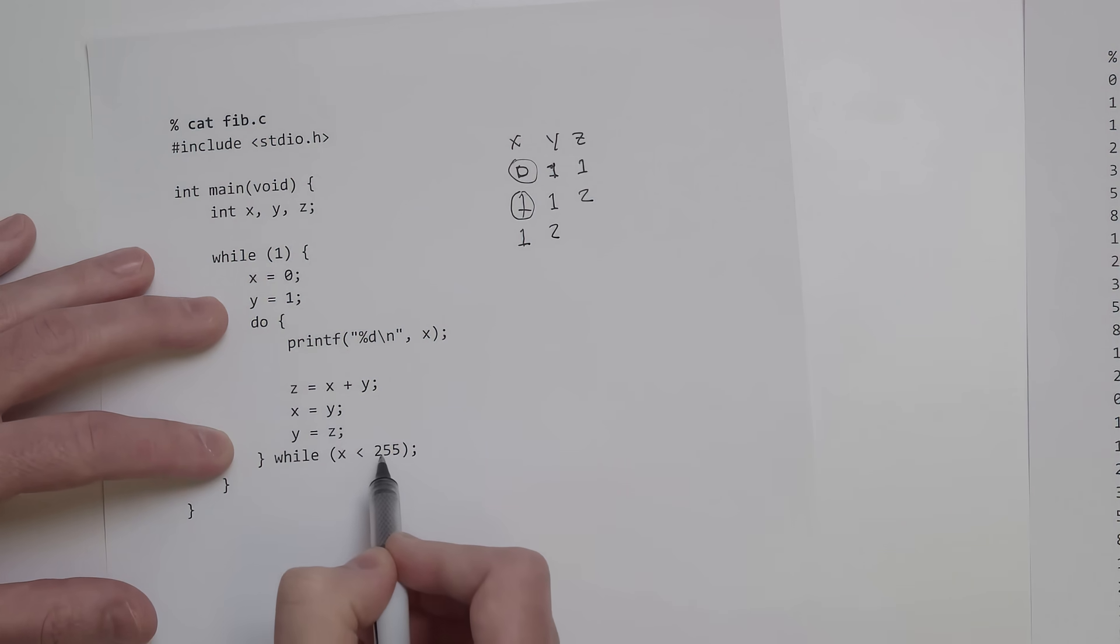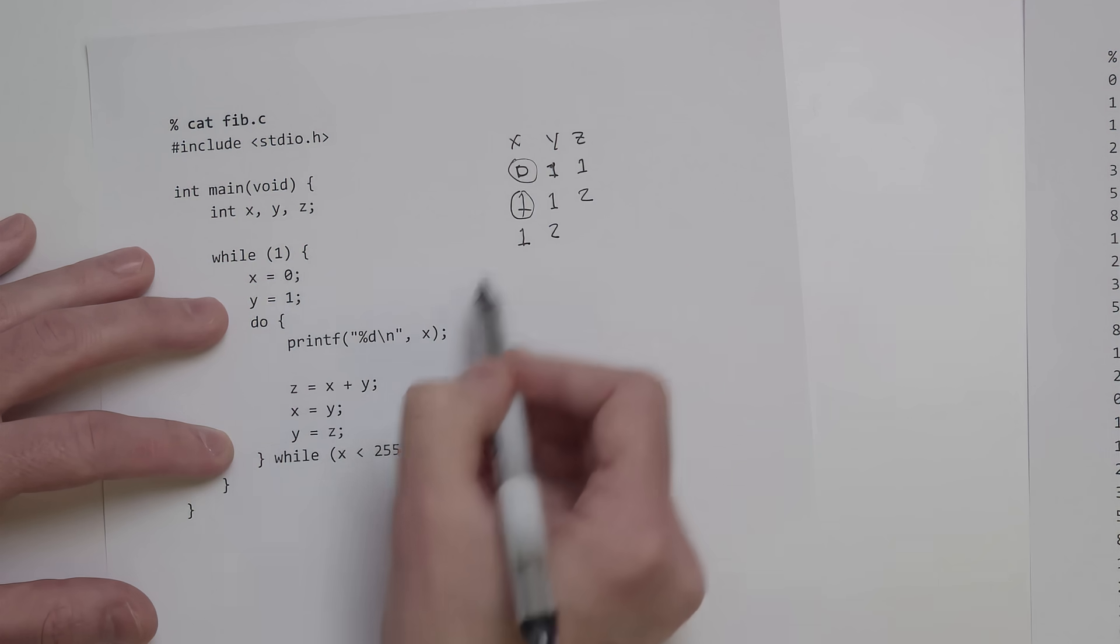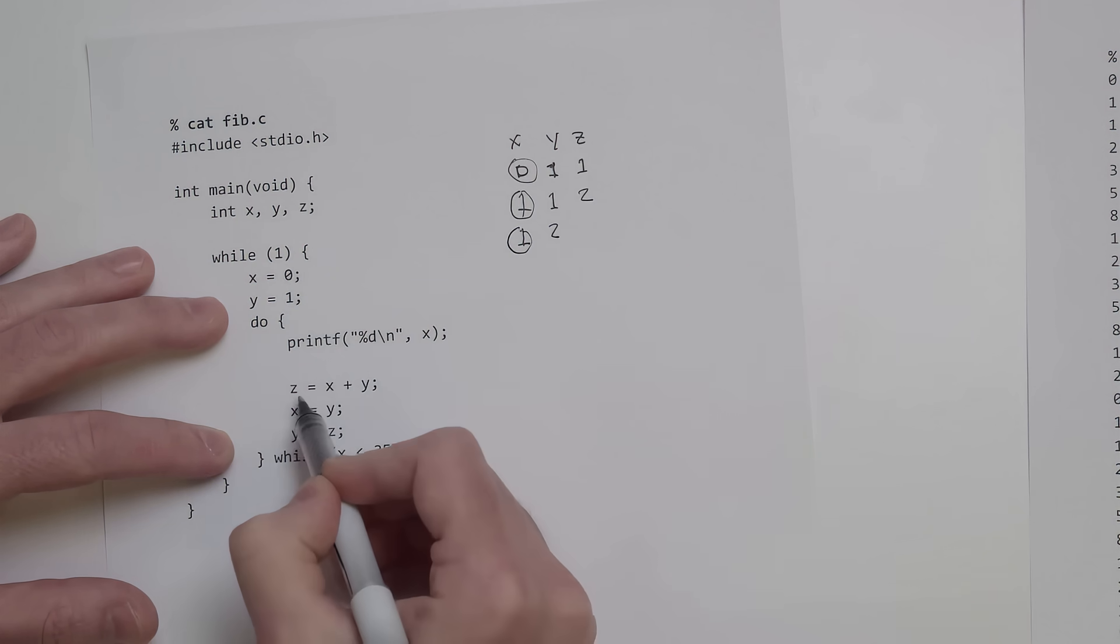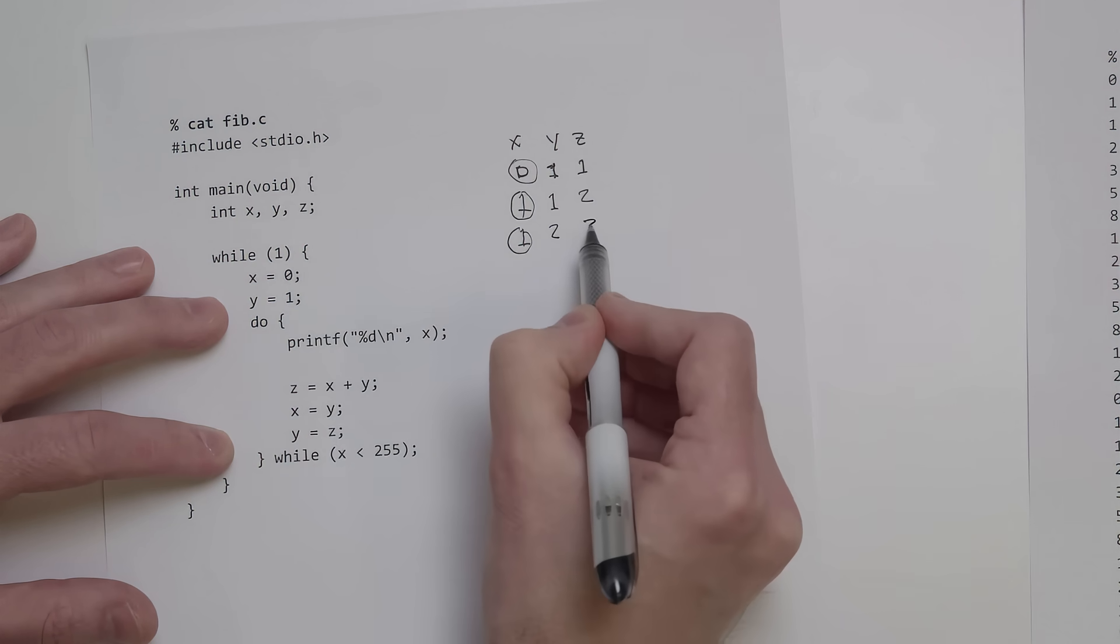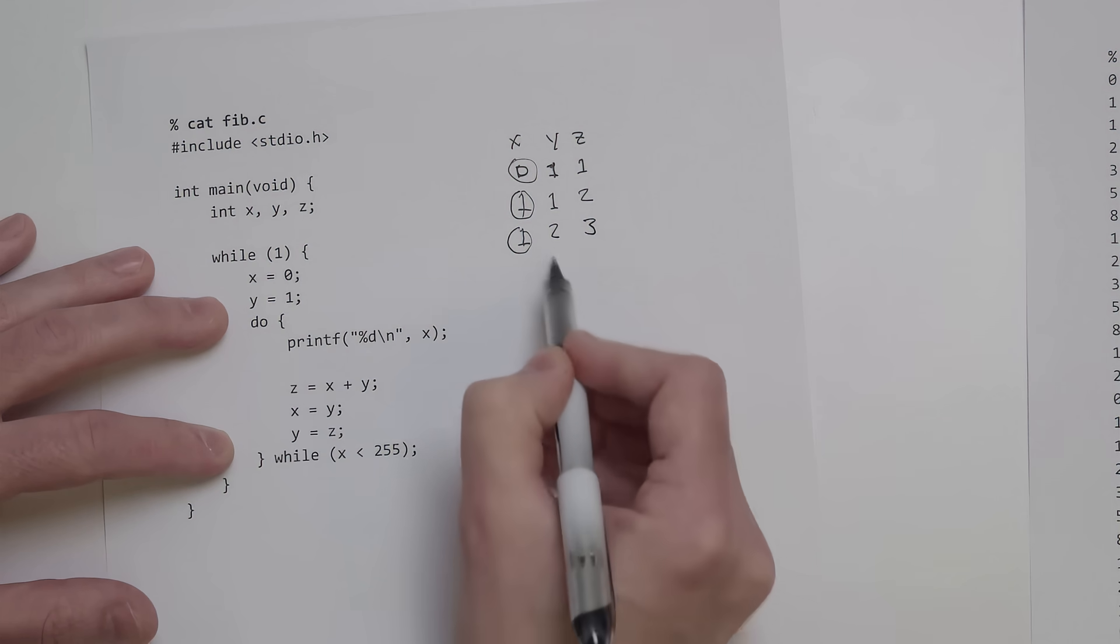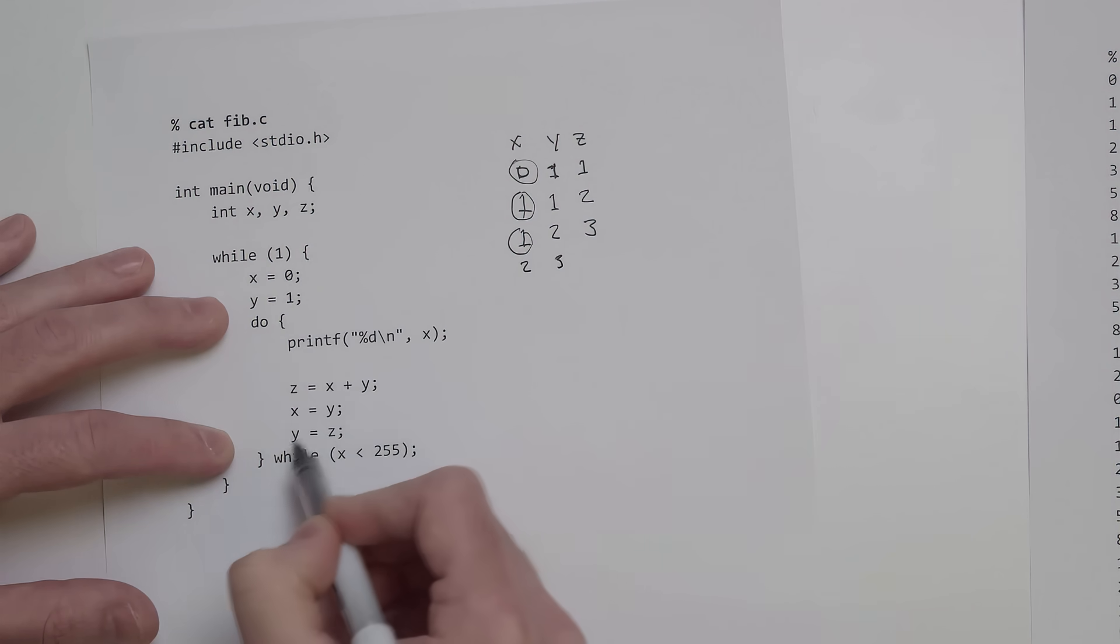We loop through again because x is less than 255. Here we print out 1, compute z which is now 1 plus 2, which is 3. Then we shift things over again, so the 2 shifts here, the 3 shifts here. x equals y, y equals z.